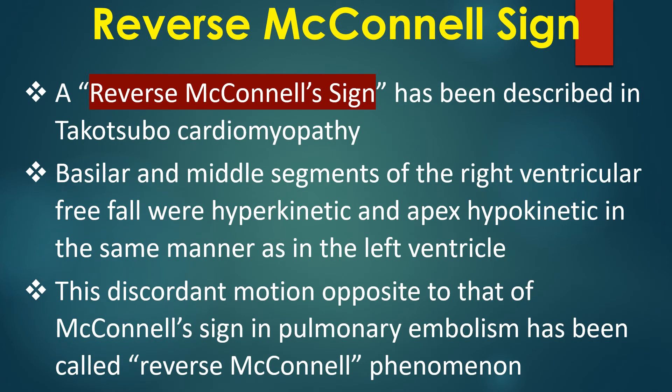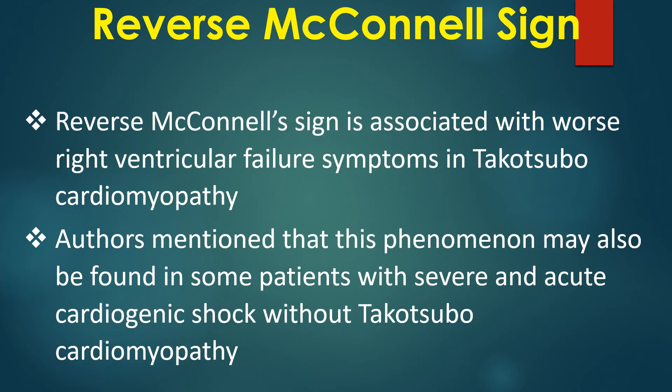A reverse McConnell sign has been described in Takotsubo cardiomyopathy. The basilar and middle segments of the right ventricular free wall were hyperkinetic and the apex hypokinetic, in the same manner as in the left ventricle. This discordant motion, opposite to that of McConnell sign in pulmonary embolism, has been called the reverse McConnell phenomenon. It is associated with worse right ventricular failure symptoms in Takotsubo cardiomyopathy.